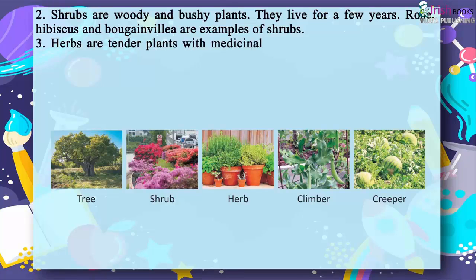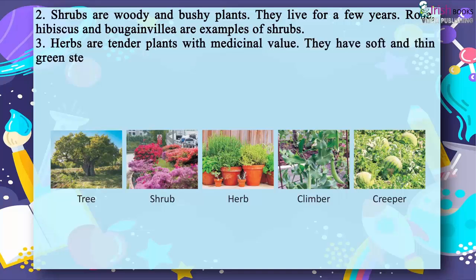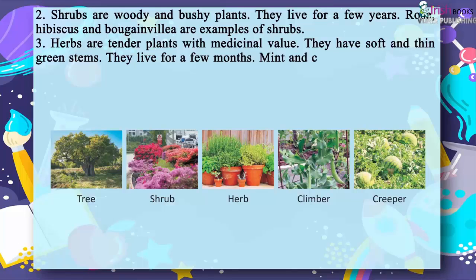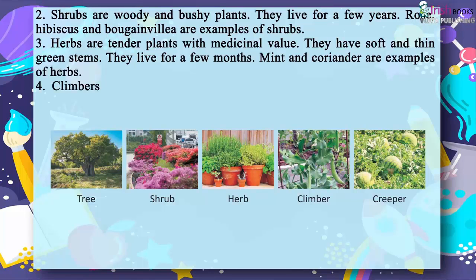3. Herbs are tender plants with medicinal value. They have soft and thin green stems. They live for a few months. Mint and coriander are examples of herbs.